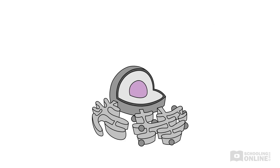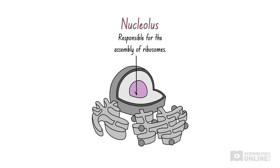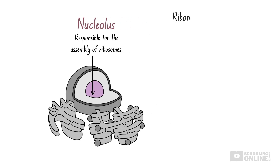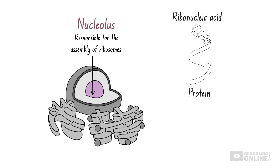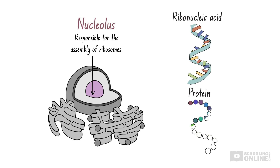Finally, the third main component of the nucleus is the nucleolus, which is responsible for the assembly of ribosomes. Ribosomes are organelles involved in protein synthesis, which we'll discuss in our second video on animal cells. The nucleolus is comprised of ribonucleic acid and proteins. Ribonucleic acid consists of a long chain of small molecules known as nucleotide bases, while proteins are long, structured chains of amino acids.